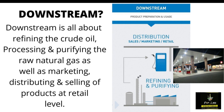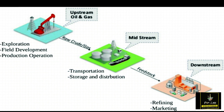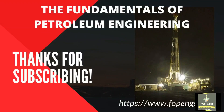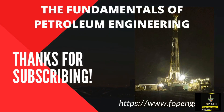Hope this last image will clear your concept about upstream, midstream, and downstream. To summarize: upstream is all about exploration and production; midstream is all about storage and transporting; downstream is all about refining and marketing. Hope your concepts are clear — thanks for subscribing.